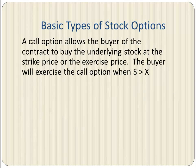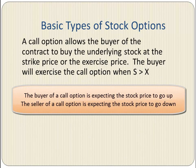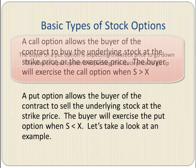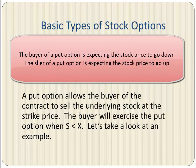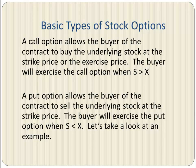There are two basic types of stock options. The first one is the call option, which allows the buyer of the contract to buy the underlying stock at the strike price or the exercise price. The buyer will exercise the call option when the stock price is above the exercise price. A put option allows the buyer of the contract to sell the underlying stock at the strike price. The buyer will exercise the put option when the stock price is below the strike price — that way, the buyer is selling the stock at a higher price.